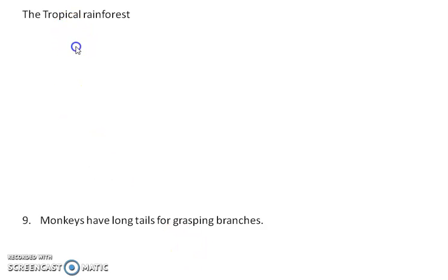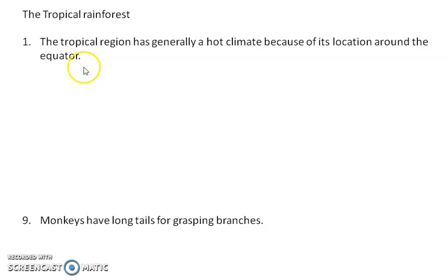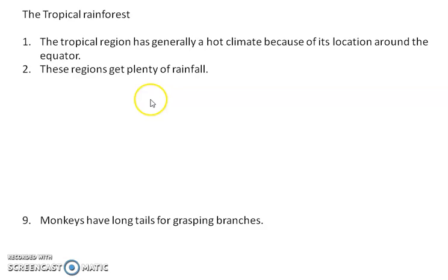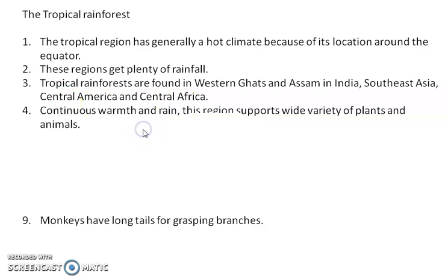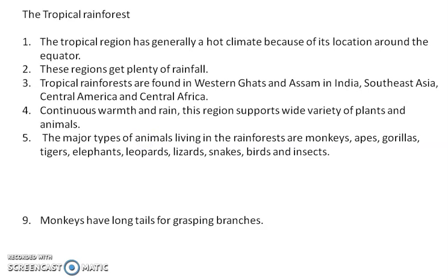Next, we are going to look at the tropical rainforest. Tropical rainforest is an area very close to the equator, so it has a very hot climate along with plenty of rainfall. This type of climate is seen in India — especially the Western Ghats — as well as Southeast Asia, Central America, and Central Africa, which are near the equator. Because of continuous warmth and rain, the water supply is sufficient, so a variety of plants and fruits grow there, and varieties of animals can also be found.